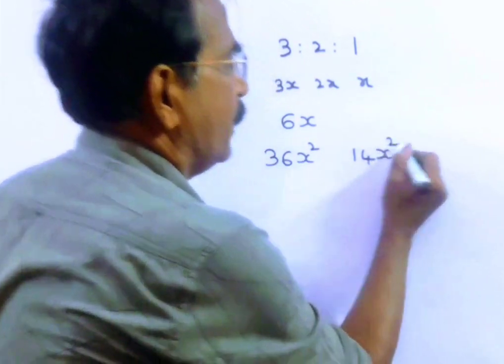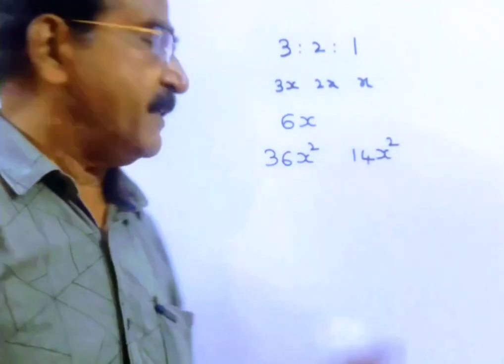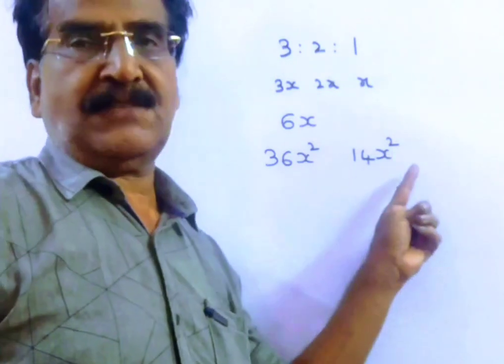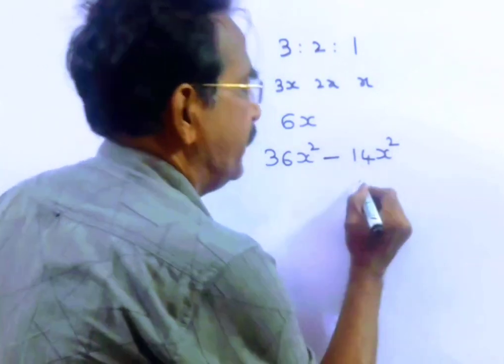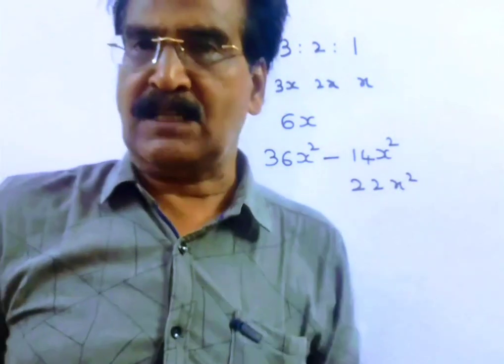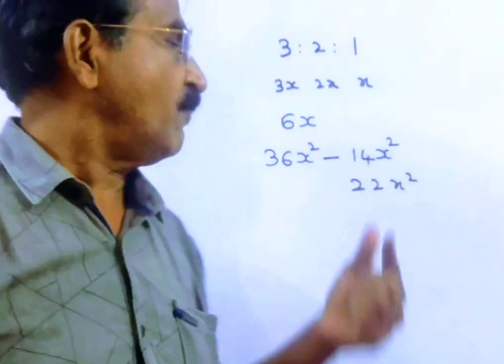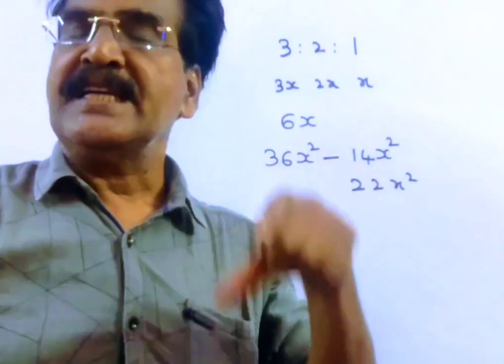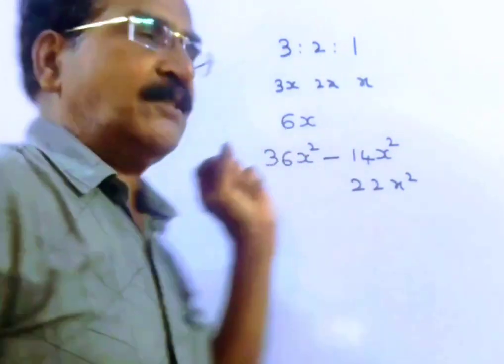So now the loss is 36x whole square minus 14x whole square, that is 22x whole square. So now we have to find the loss. That means we have to find the value of 22x whole square given that 36x whole square,